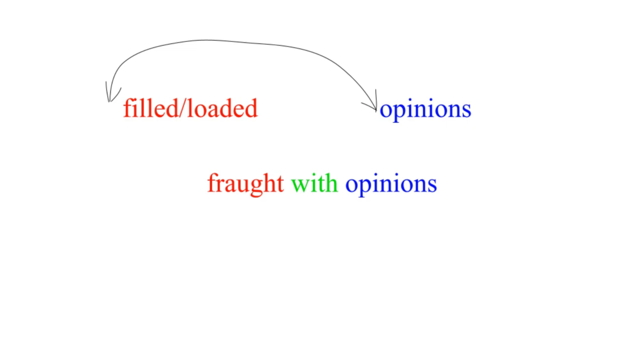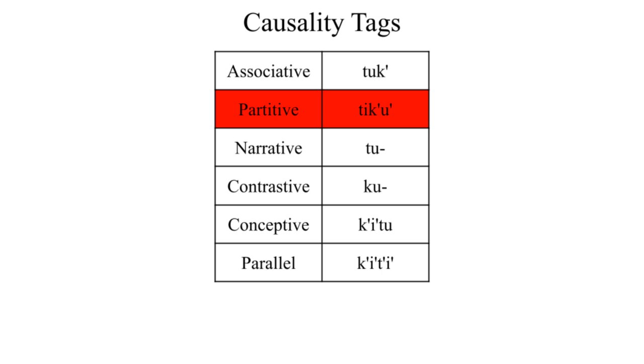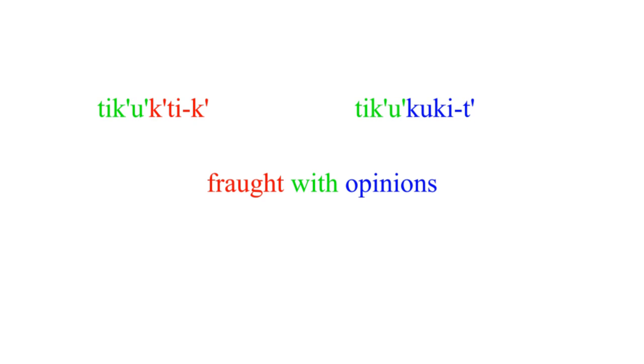Now, opinions aren't animate, so they can't be causes, but opinionated people can be. The shorthand for opinionated people is, and the verb is, with a participle ending. Together, these use a different version of causality. For this case, it's the partitive causality tag, appended to the start of both words.